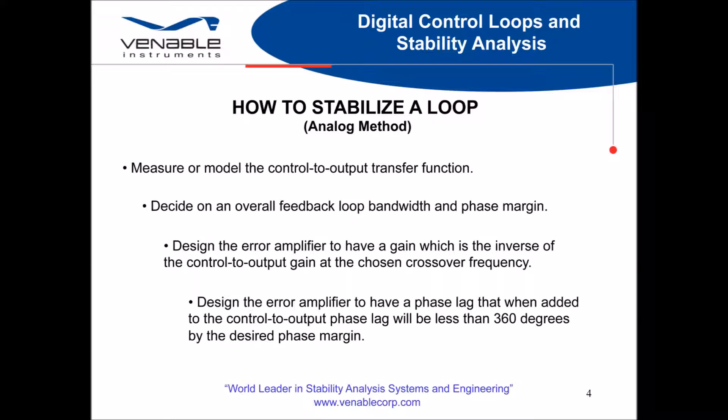We have a basic procedure for stabilizing a loop for an analog system as follows. First, we measure or model the transfer function of the modulator section of the power supply. Then, we choose what we want the feedback loop bandwidth and phase margin to be. Finally, we design an error amplifier that will provide us a gain that is the inverse of the control-to-output gain at the chosen crossover frequency and has a phase lag that, when added to the control-to-output phase lag, will be less than 360 degrees by the desired phase margin.